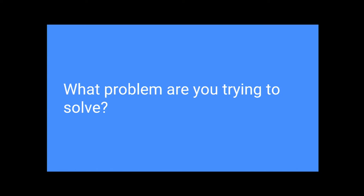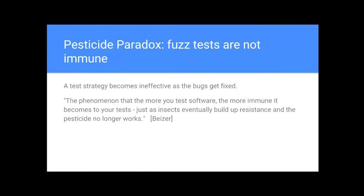The first problem I've seen with fuzz testing is the pesticide paradox. When you write a fuzz test, it immediately finds tons of bugs — you're exercising passive code in a different way. But over time it becomes less effective. Crash Me would crash kernels in 30 seconds 20 years ago; today it could run for days because those paths have been repaired. The File System Exerciser had the same history — huge buzz at first, lots of bugs, and today not so much. I want a framework that lasts for years and keeps finding bugs.